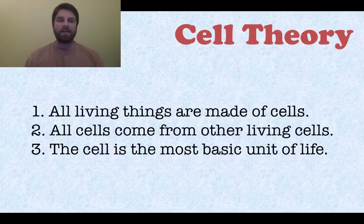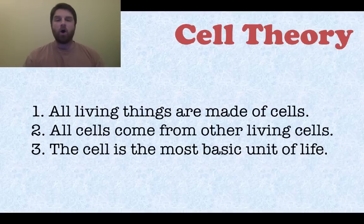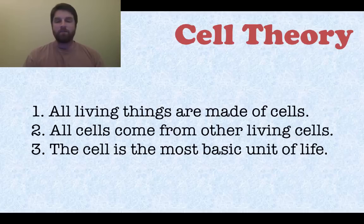So here's a little recap. Cell theory can be broken down into these three statements: all living things are made of cells; all cells come from other living cells; and the cell is the most basic unit of life. These are very, very important statements to know.